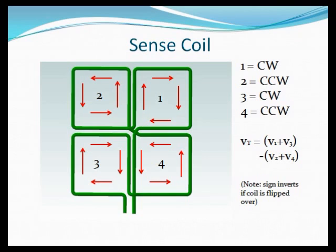We add a sense coil with four quadrants. One and three are wound clockwise while two and four are wound counterclockwise. This will cause the voltage produced by the sense coil to be dependent on the difference in the rate of change of flux passing through sectors one and three versus that flowing through two and four.